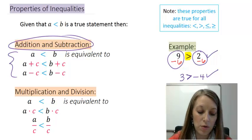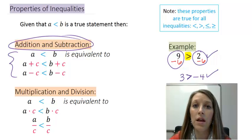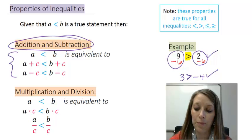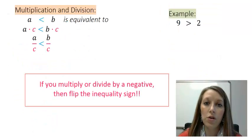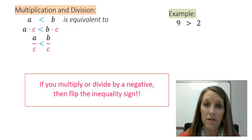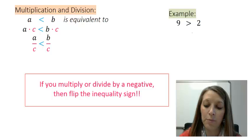Now moving on to the multiplication and division property. It looks like it should also remain the same, but let me prove there is an extra stipulation. The disclaimer says: if you multiply or divide by a negative, then you must flip the inequality sign.